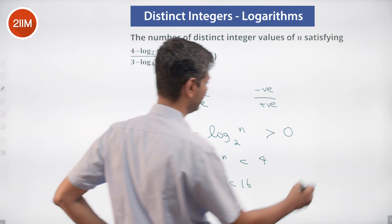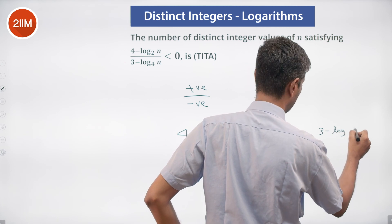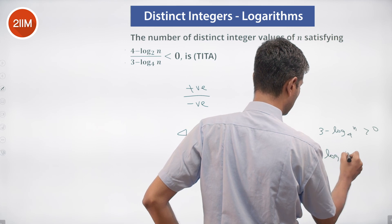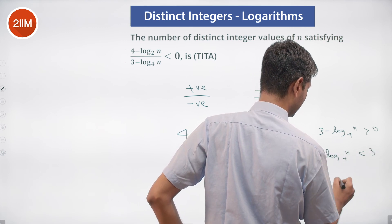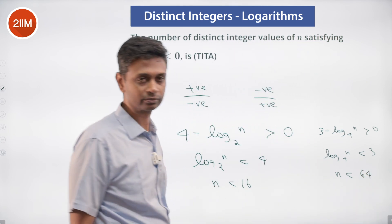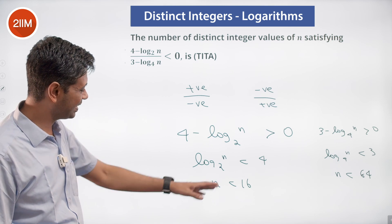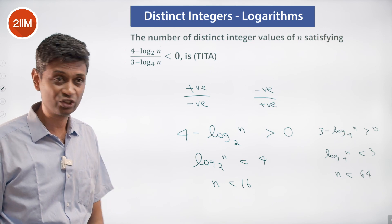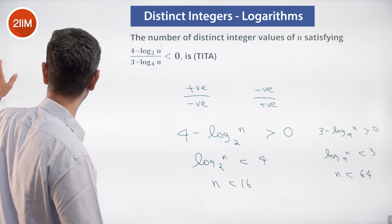Similarly, for 3 minus log n to the base 4 greater than 0, log n to the base 4 is less than 3, so n is less than 4 cubed, which is 64. So if n is less than 16, this numerator is positive, and if n is less than 64, the denominator is positive.